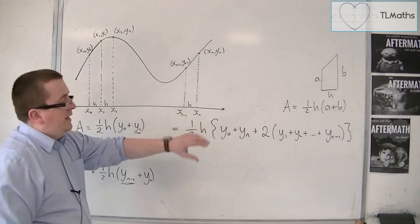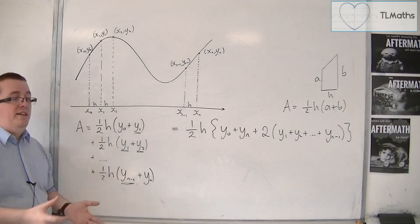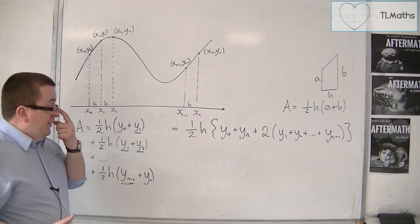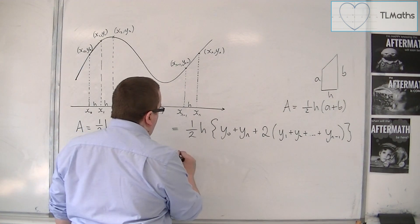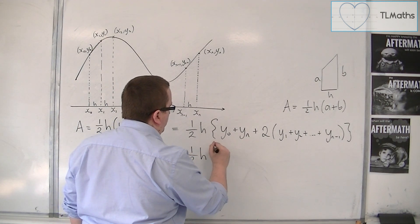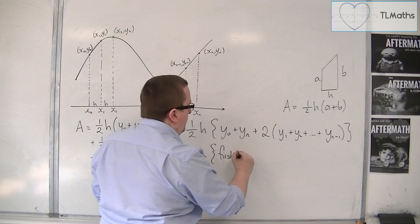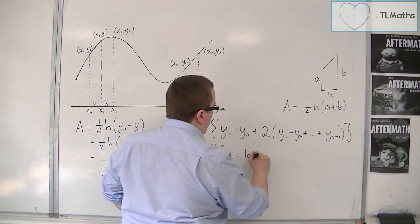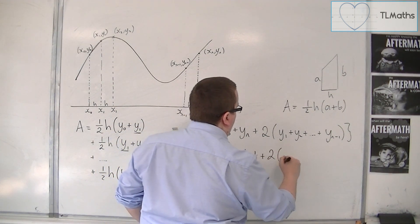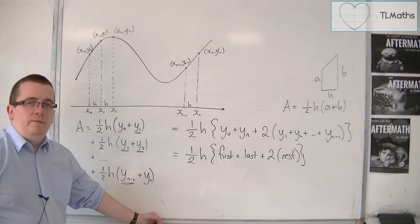And that gives me the area of, an estimate of the area underneath the curve. So what you can think of this is as 1 half h times the first plus the last plus two lots of the rest. That is how I remember it.